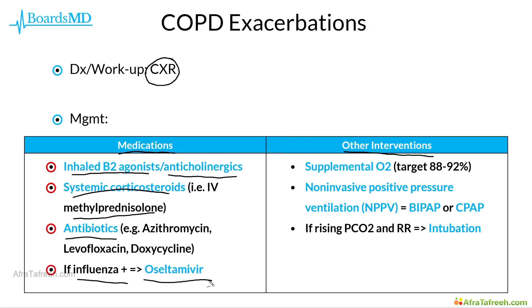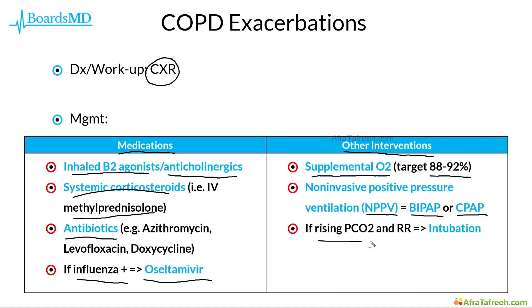In terms of other interventions, we can treat our patients with supplemental oxygen with a target oxygen level of 88 to 92 percent. From there, we can use non-invasive positive pressure ventilation, abbreviated as NPPV. Examples of NPPV include BiPAP as well as CPAP, and if while on NPPV the patient still has a rising PCO2 or rising respiratory rate, then we should consider intubation and mechanical ventilation.